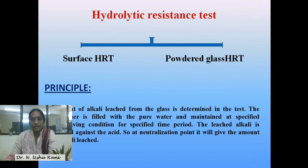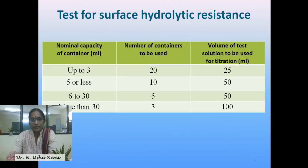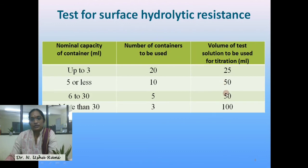The principle behind this test is that the amount of alkali that is leached from the glass material into the drug product is estimated by using a standard acid. The table shows the different capacities of the bottles, the number of containers that have to be used, and the volume of the test solution required to perform the test.